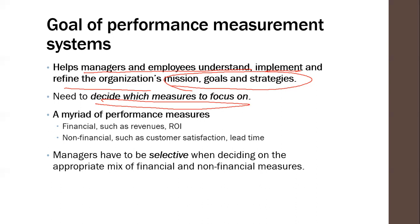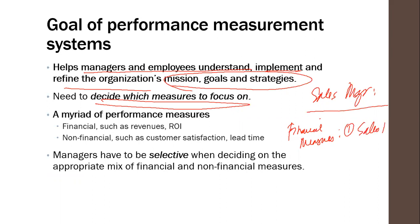There are financial and non-financial performance measures. If you're a sales manager, financial measures can be in the form of a sales target in pesos, or the amount of bad debts — for example, bad debts should be no more than 20,000. Those are all financial measures.